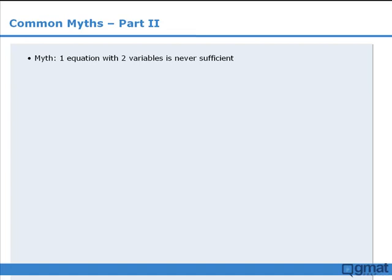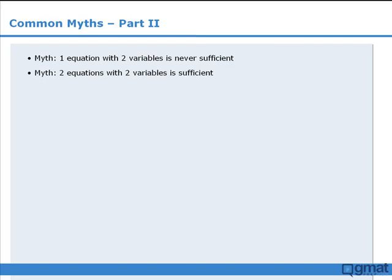To summarize, in this lesson we examined two common myths. The first myth is that one equation with two variables never provides sufficient information in a data sufficiency question. The second myth says that having two equations with two variables will always provide sufficient information to determine the individual values of x and y. While both of these myths can apply to several situations, they do not always apply — so watch out for the traps we looked at in this lesson.